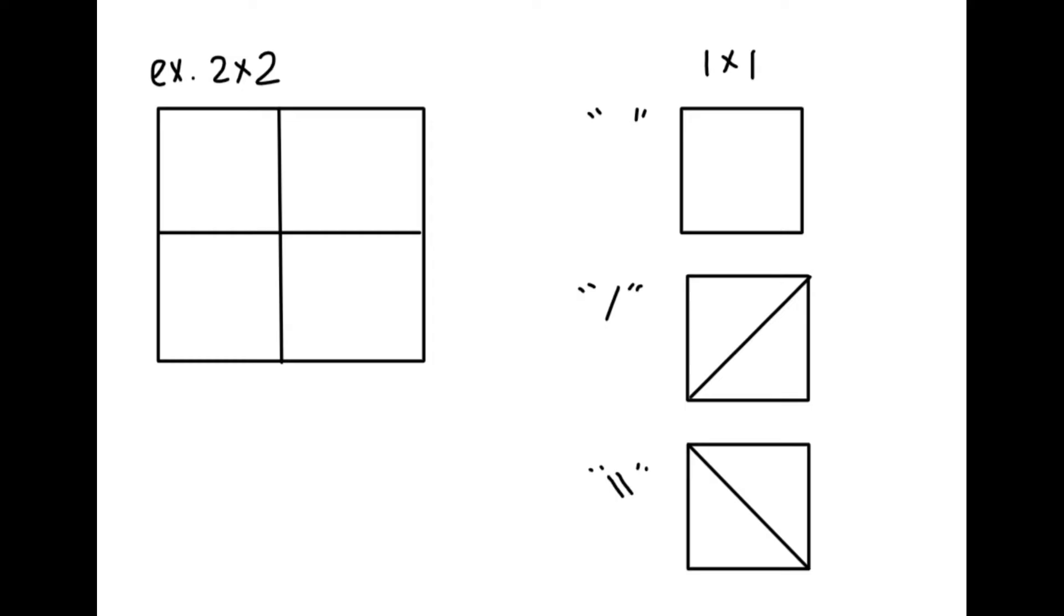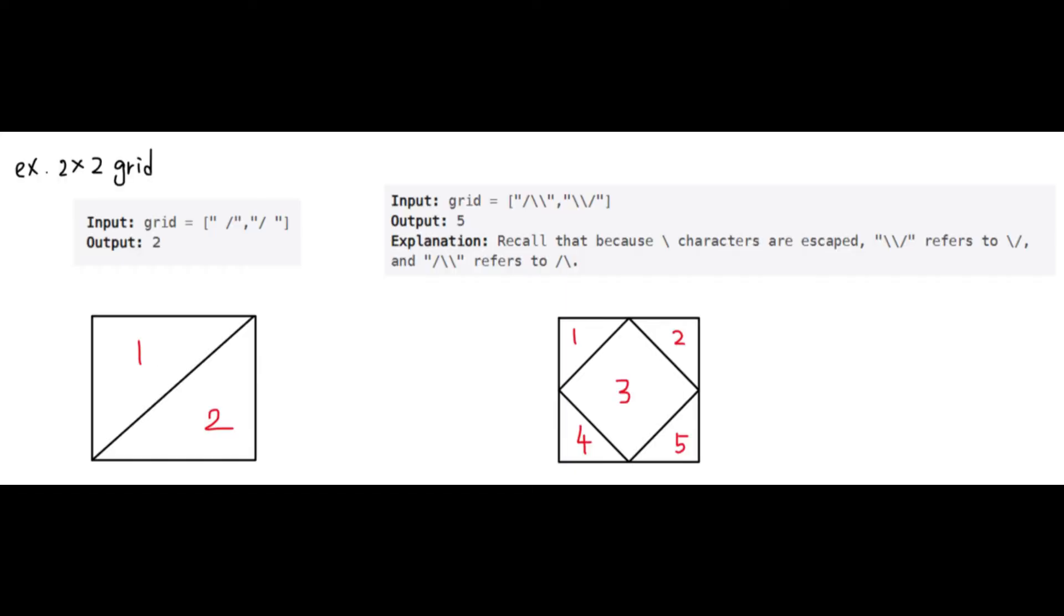In this problem, we are given a grid of n times n squares, where each 1 times 1 square is either a blank space or contains a slash or a backslash. These characters divide the squares into different regions, and the goal is to count the number of connected regions in the grid.